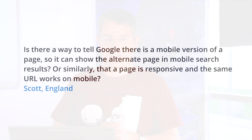Today's question comes from Scott in England, and it's a really popular question — a lot of people have been asking about mobile phones and mobile versions of pages. The question is: is there a way to tell Google there is a mobile version of a page so it can show the alternate page in mobile search results?